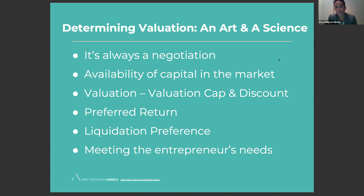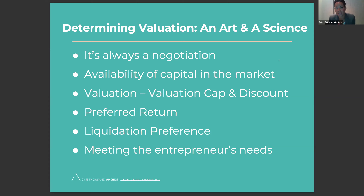The last thing people largely overlook is liquidation preferences. For about the last decade, these have pretty much always been 1x. Liquidation preference means that when the company has a liquidity event, what multiple of their original capital are investors entitled to receive right off the top before equity is split. Back in the early 2000s, you'd often see preferences of 2x or 3x. Anything higher than 1x makes the deal more attractive to investors, so if it goes above 1x, you're essentially reducing the effective valuation without changing the stated number.